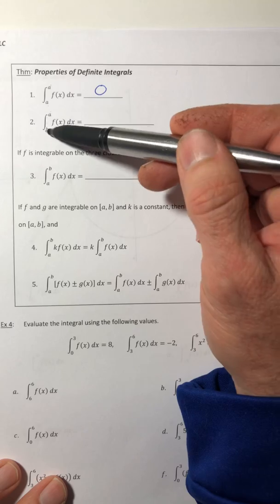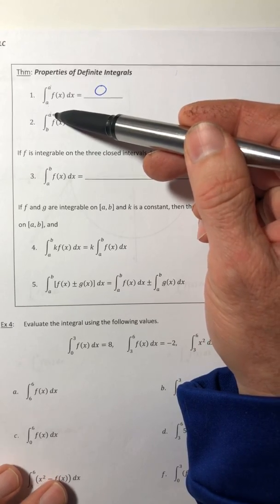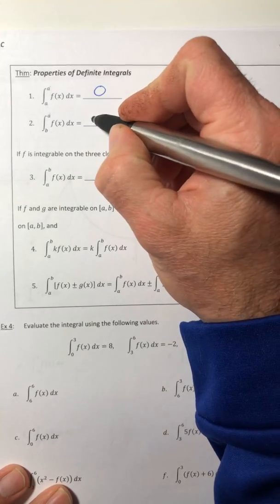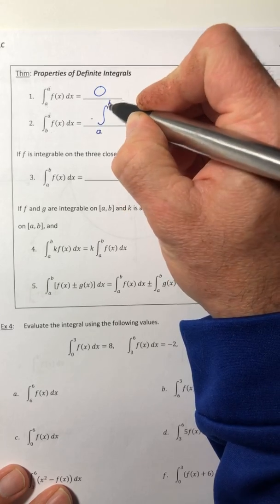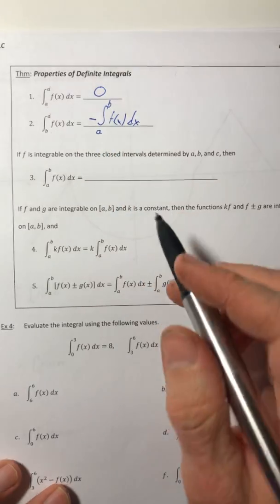Second property is if you notice that the bounds are flip-flopped, so the smaller number is at the top and the bigger one's underneath, then you can flip the order as long as you make it negative out in front.